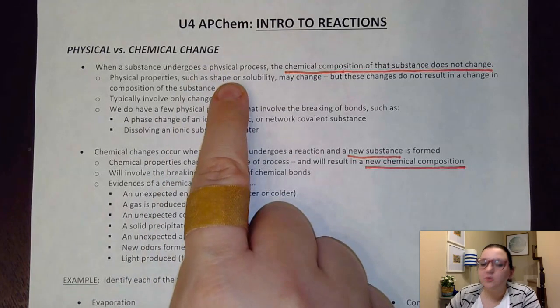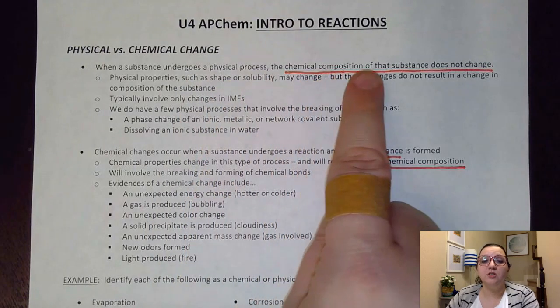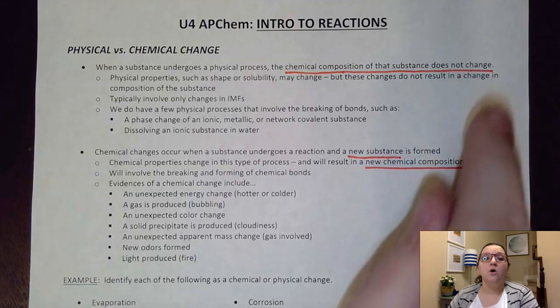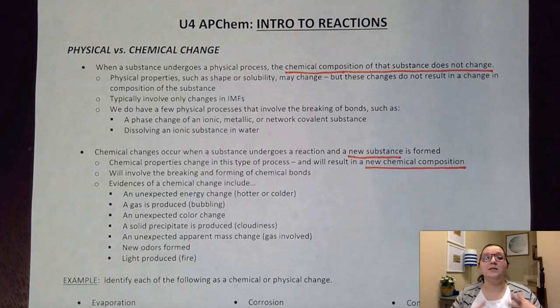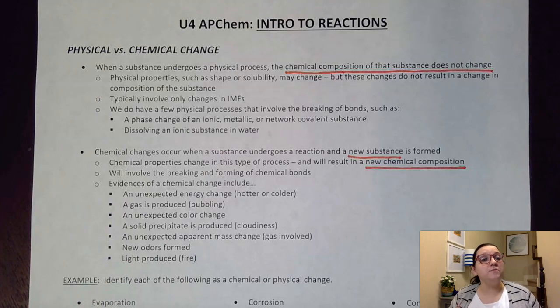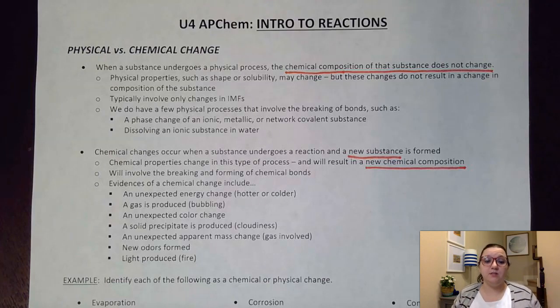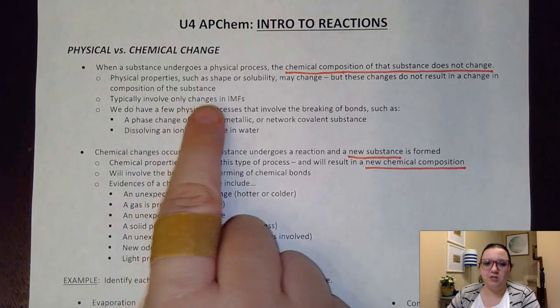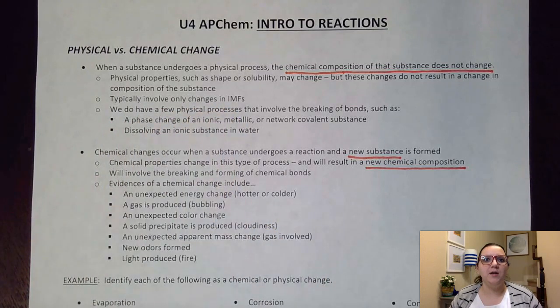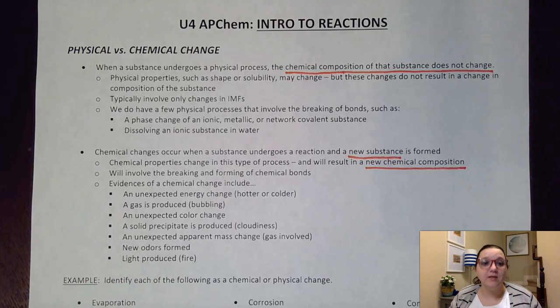So to start us off here, with physical processes, we would say that the chemical composition of that substance does not change. What that means is my chemical formula is going to remain exactly the same. Now I may be changing certain physical properties about it, maybe the shape of the substance or the state of the substance or the solubility of it, but the chemical formula itself would not change. Now typically these only involve changes in intermolecular forces. For example, when I do a phase change to something that is covalent, I would only be impacting those intermolecular forces, either breaking them or forming them, depending on what kind of phase change I'm doing.